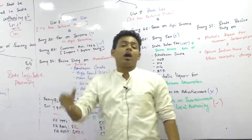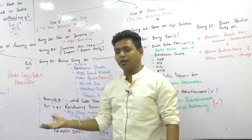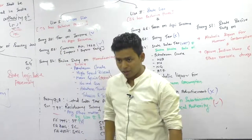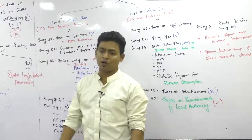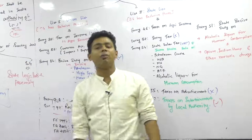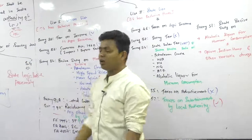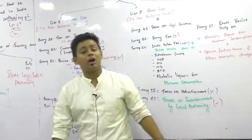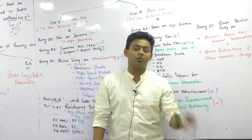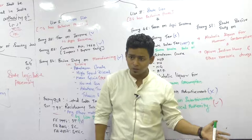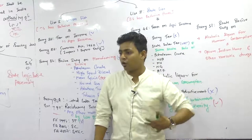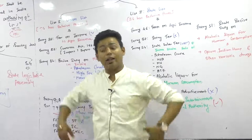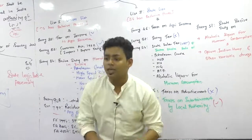That act can be passed by either the central government or the state government. Power has been divided between these two governments. According to Article 245, central government means law will be made in Parliament, and state government means law will be made by the state legislative assembly. The question arises: which government can make which laws? What kind of law is the center authorized to make, what kind is the state authorized to make, and can they both come together and pass any law?